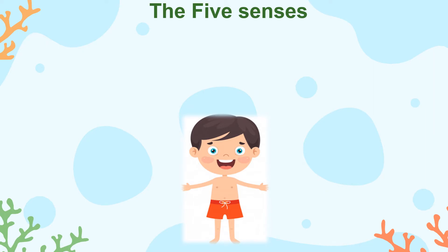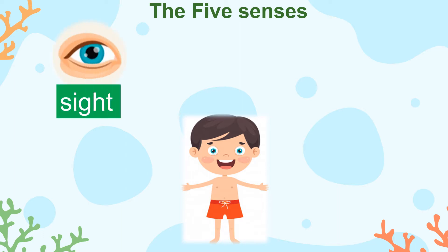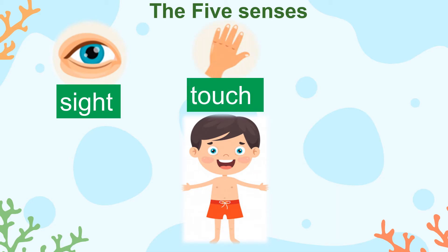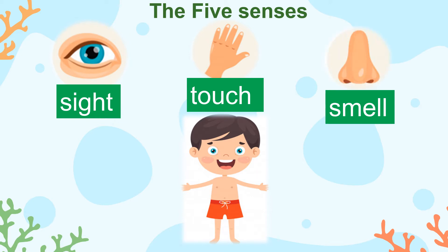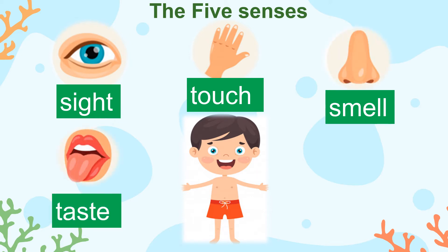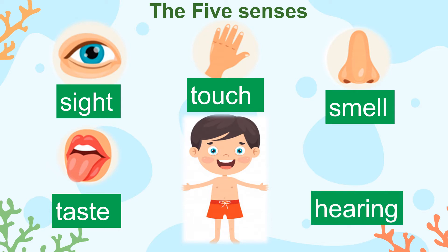There are five main ways we can do this: through sight with our eyes, touch with our hands or fingers, smell with our nose, taste with our tongue, and hearing with our ears.